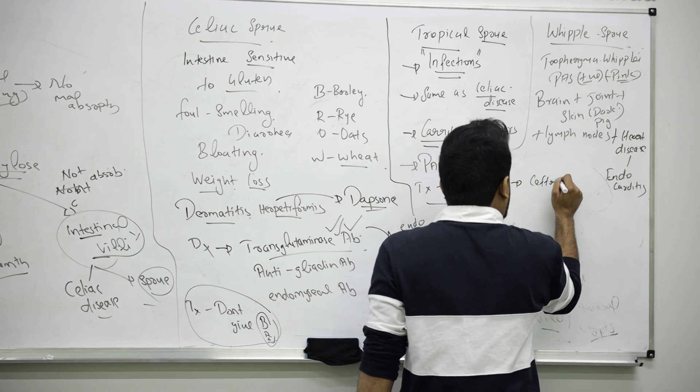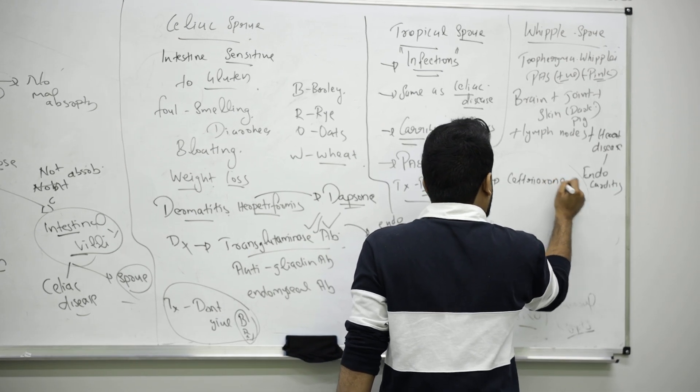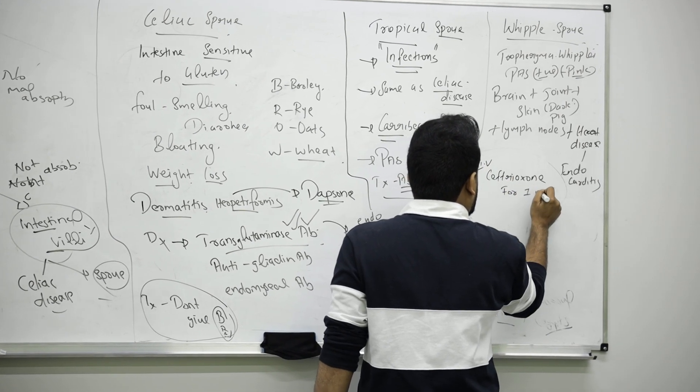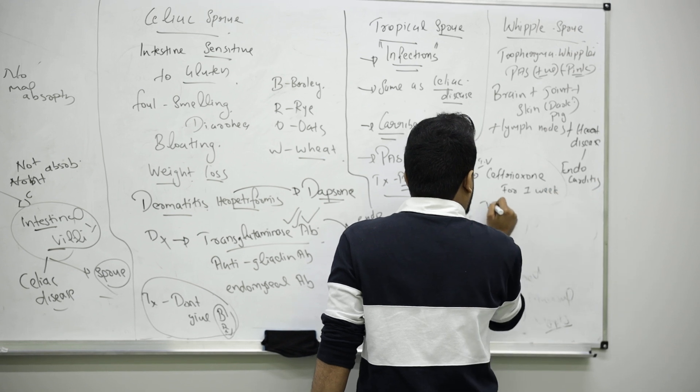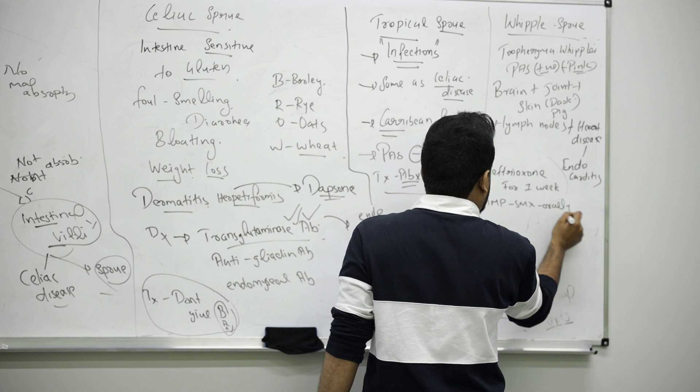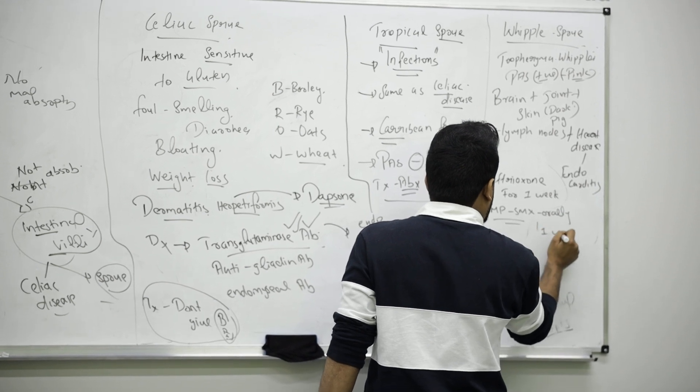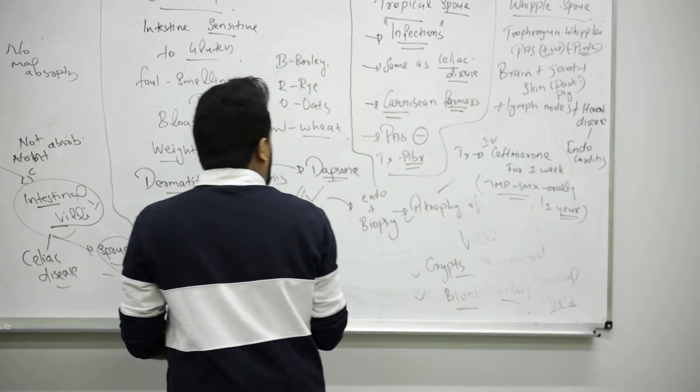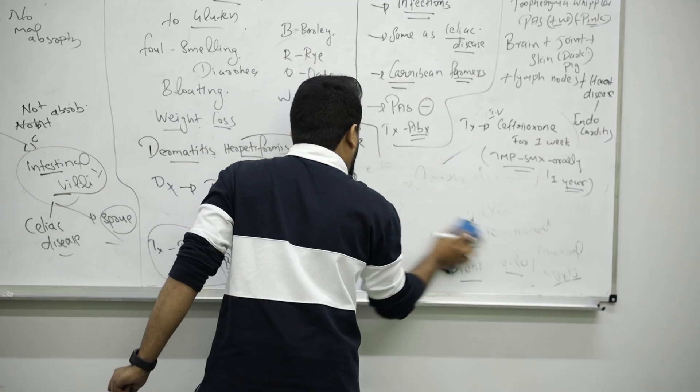Ceftriaxone and TMP-SMX orally, maybe for one year even can give. So these are the three main important sprues, and you know how to differentiate now tropical sprue and Whipple sprue.